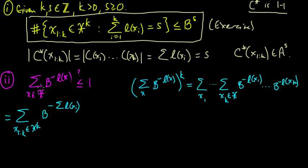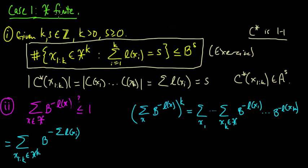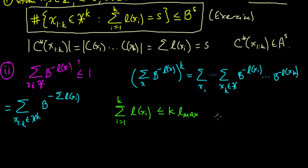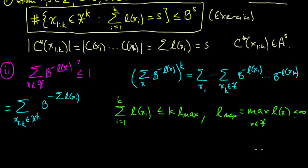Now we're assuming 𝒳 is finite. This tells us something useful: the exponent ∑ᵢ l(xᵢ) is at most k·l_max, where l_max = max_x l(x). Since 𝒳 is finite, this maximum exists and is a finite number. That is the key place where we use the finiteness of 𝒳.